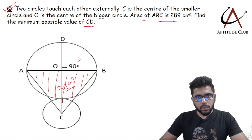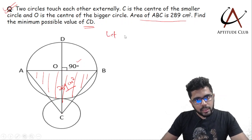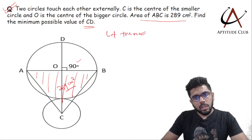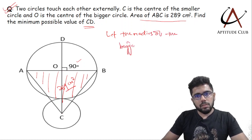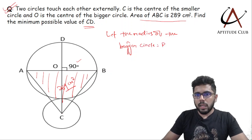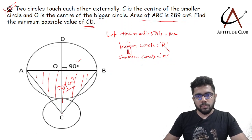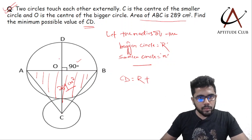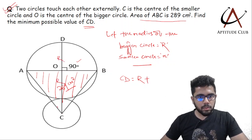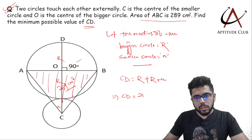We will have to find the minimum possible value of CD. So I will start like this. Let the radius of the bigger circle be R (capital R), and the radius of the smaller circle be r (small r). Then can I write CD as R plus R plus r? So CD is basically 2R plus r.